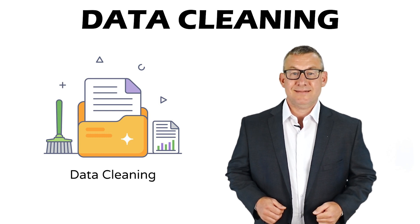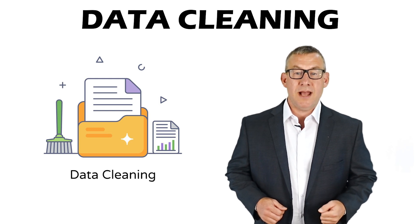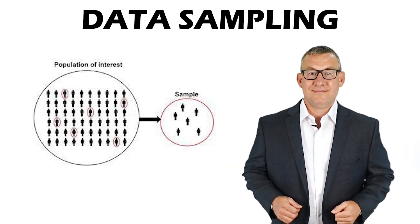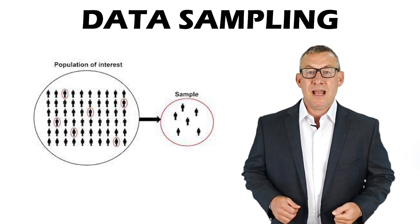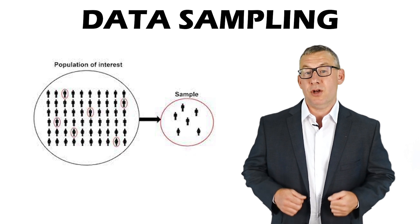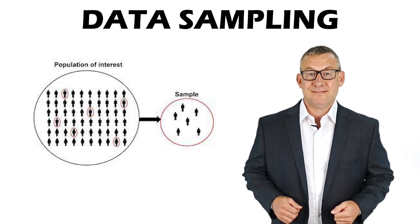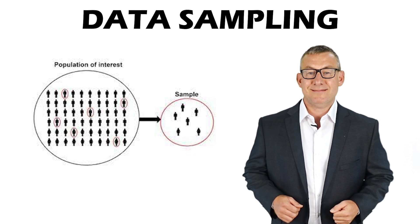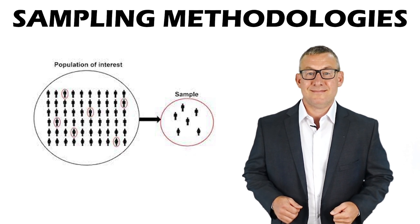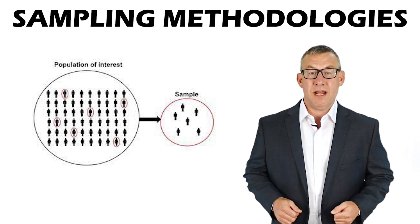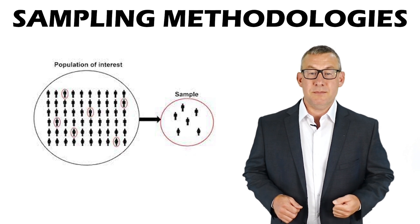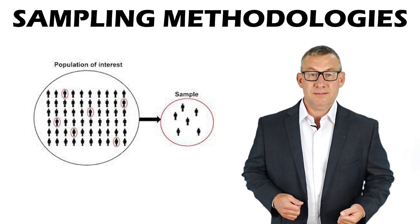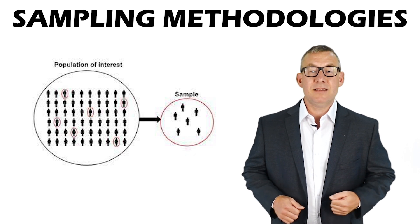Data Cleaning: cleaning data involves removing errors and standardizing formats. Sampling: samples of data can be analyzed to estimate the quality of a total data set. Sampling data may involve choosing the locations, patterns, and numbers of samples. There are five basic methods for sampling data: systematic sampling, random sampling, cluster sampling, stratified sampling, and adaptive sampling.